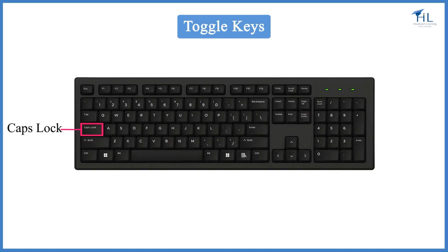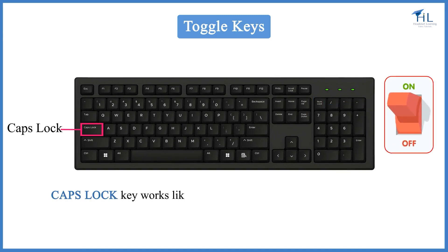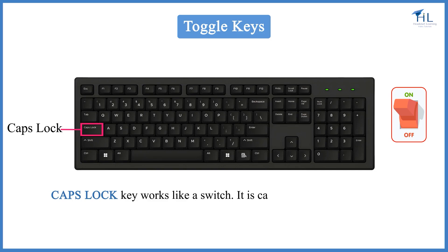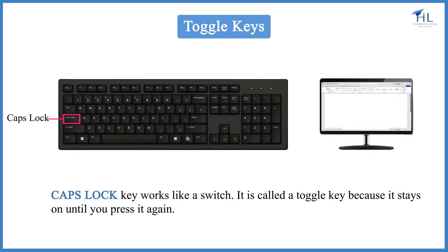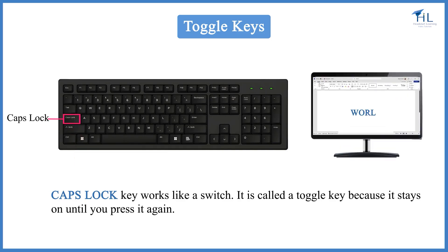Let us now learn about the toggle keys — caps lock and num lock. The caps lock key works like a switch. It is called a toggle key because it stays on until you press it again. Pressing the caps lock key one time capitalizes each letter typed on the keyboard. When you tap the caps lock key again, the letter keys will type as lowercase letters. Caps lock only works on letter keys and does not work on number keys and symbol keys.